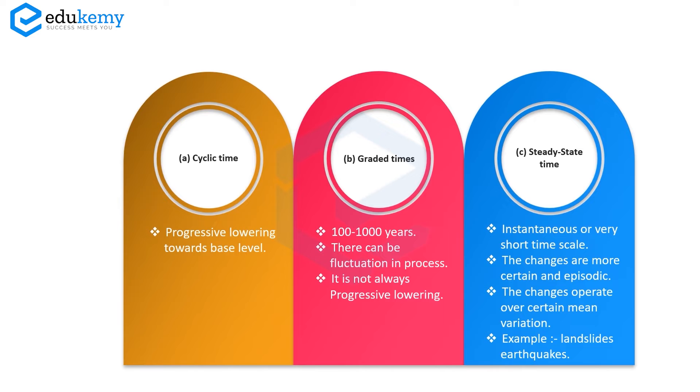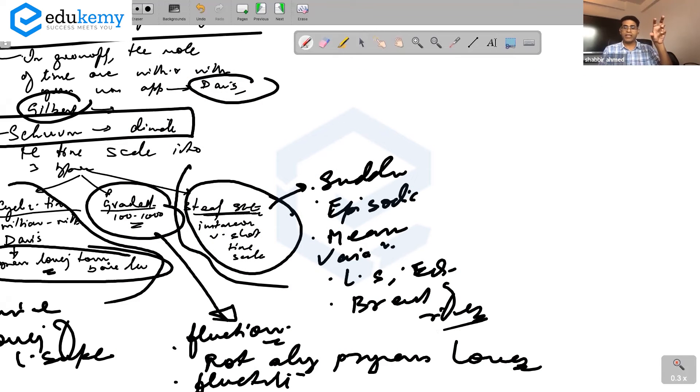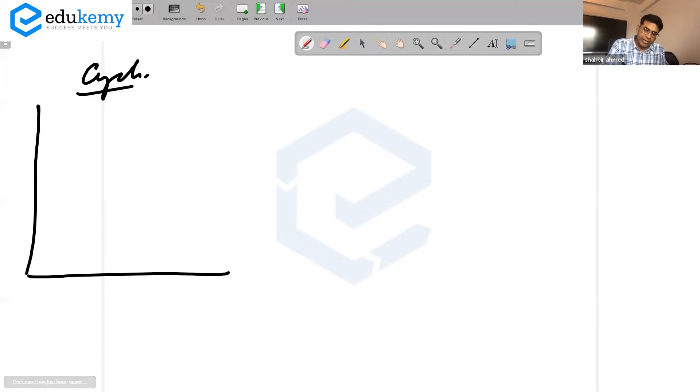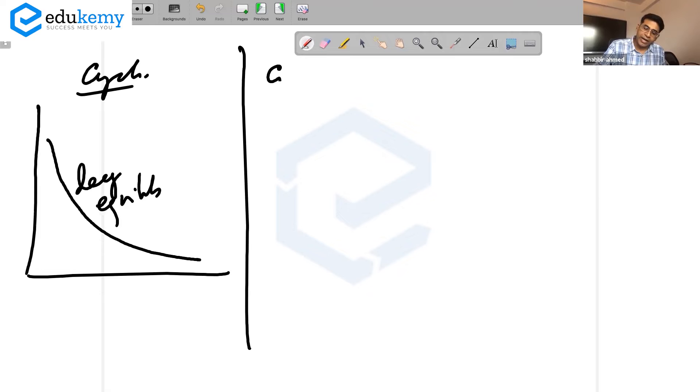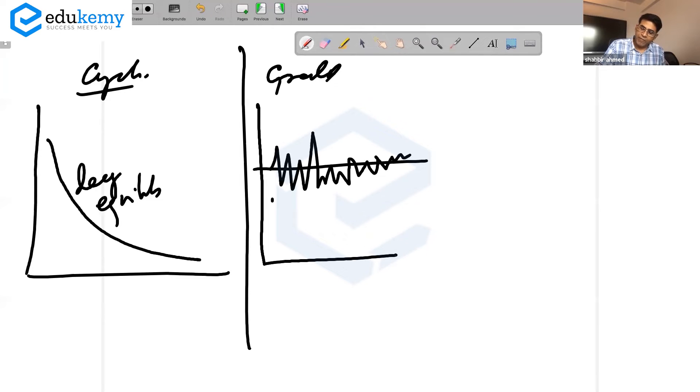If you look at small scale, if you look at the steady-state scale of time, these are related to sudden episodic changes. In cyclic time there is progressive lowering of the landscape. This is what's called decay equilibrium.